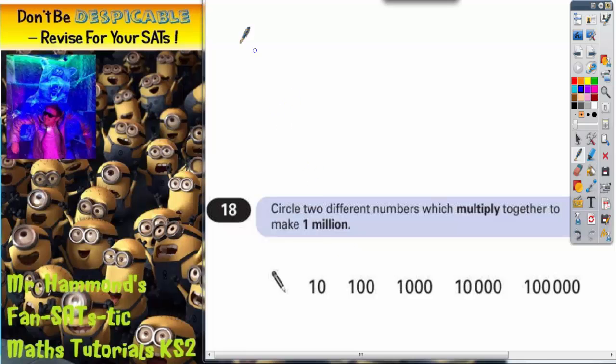The first thing we need to do is understand how one million is actually written in digits. Well one million is the same as a one with six zeros. One, two, three, four, five, six.